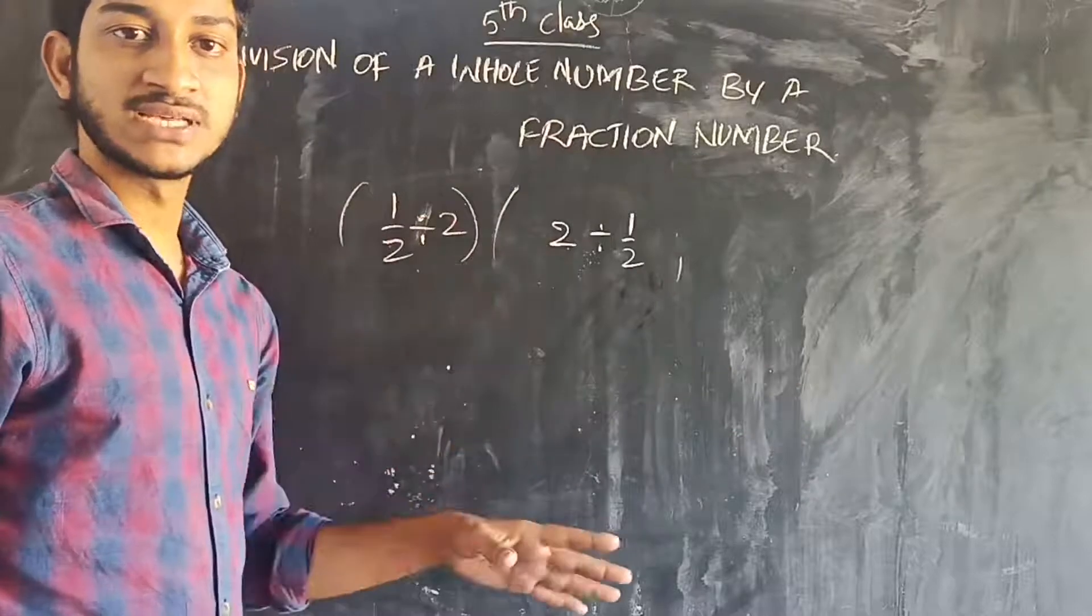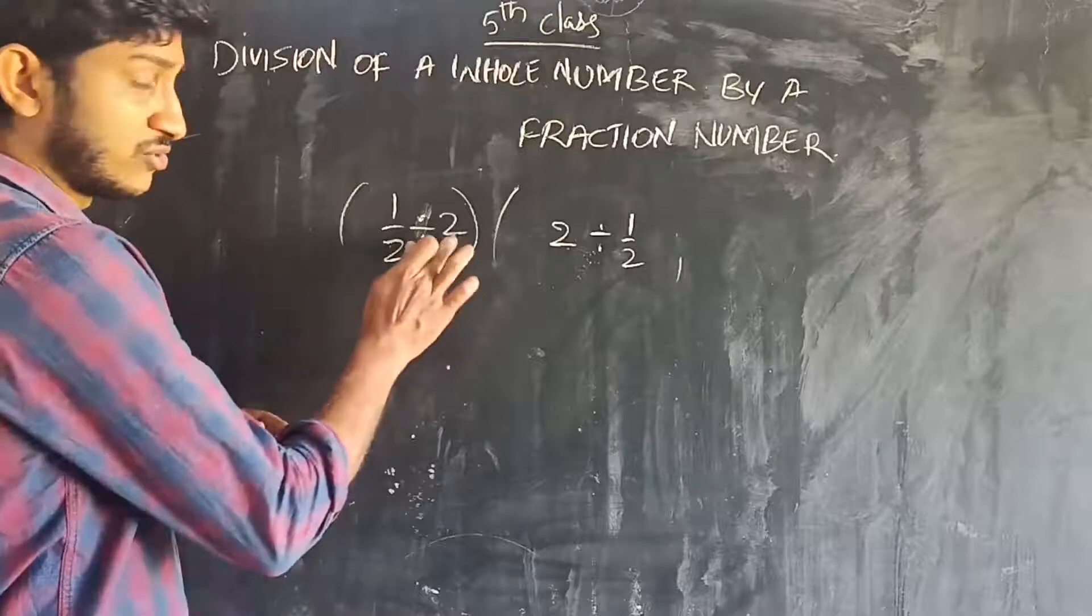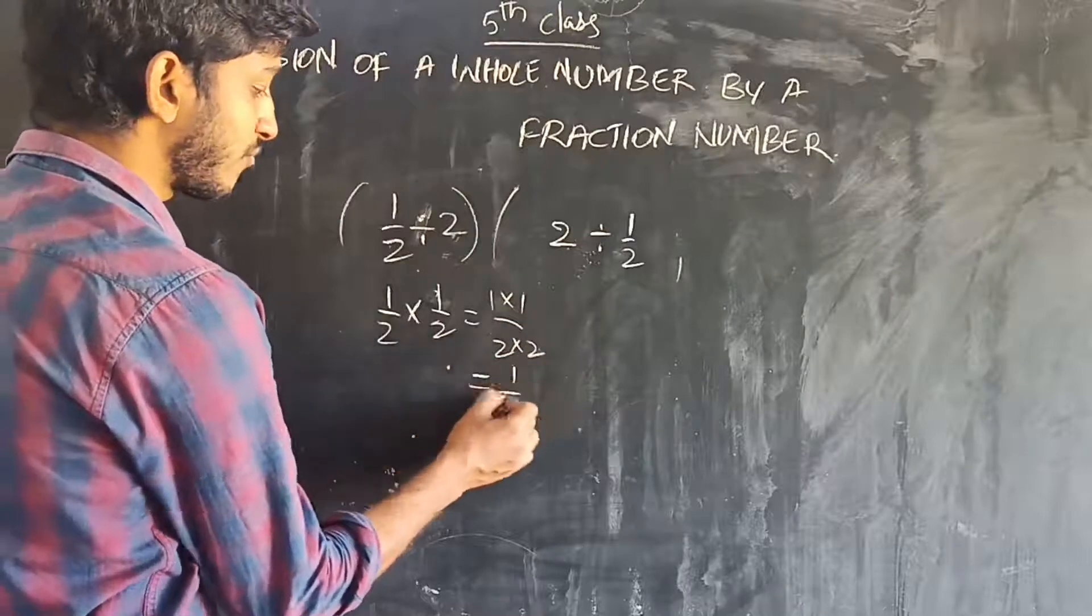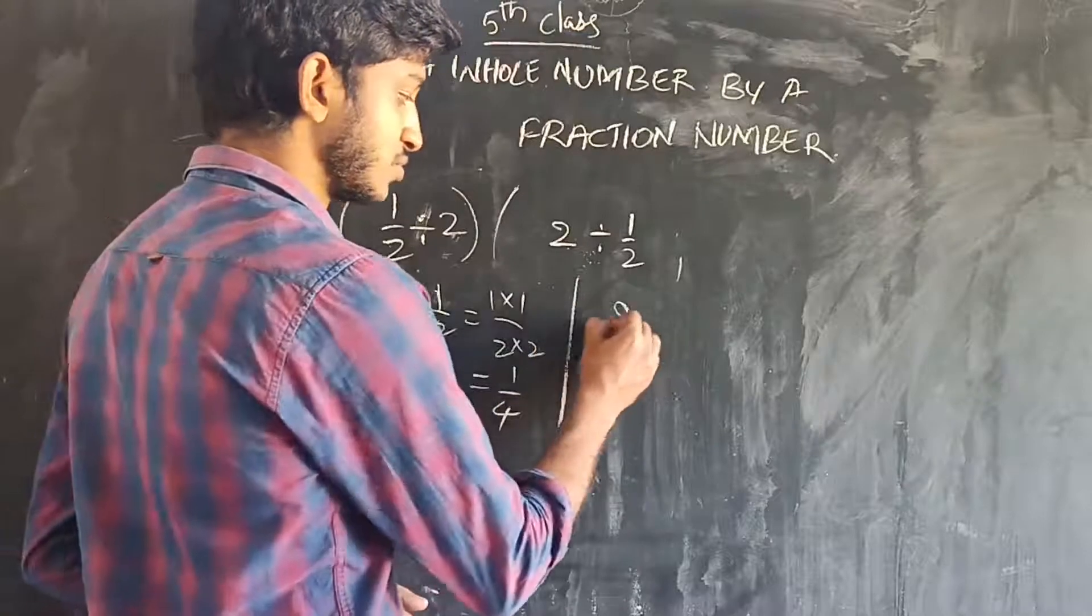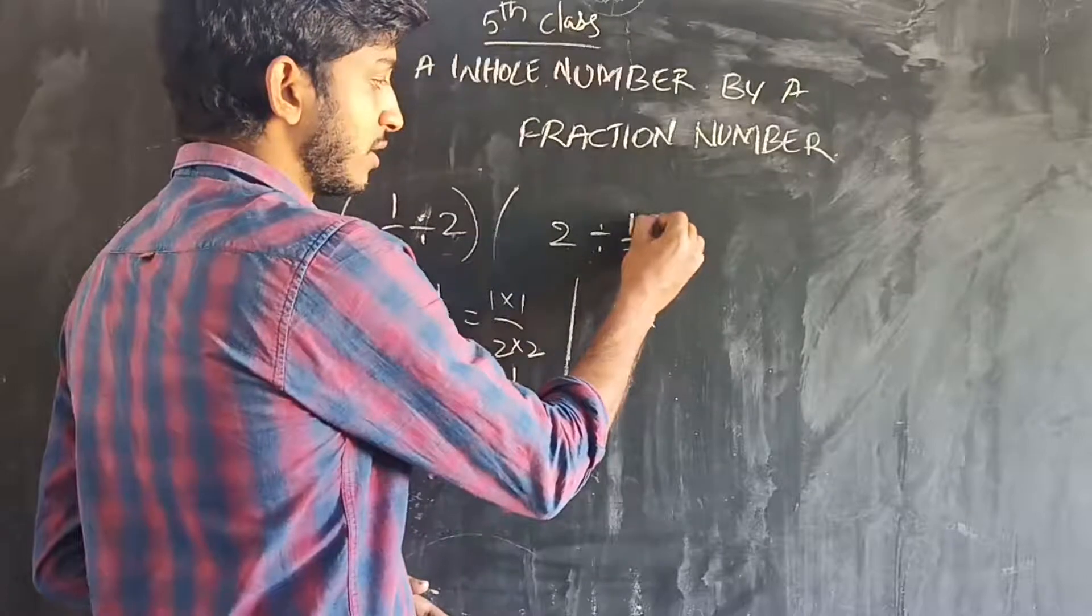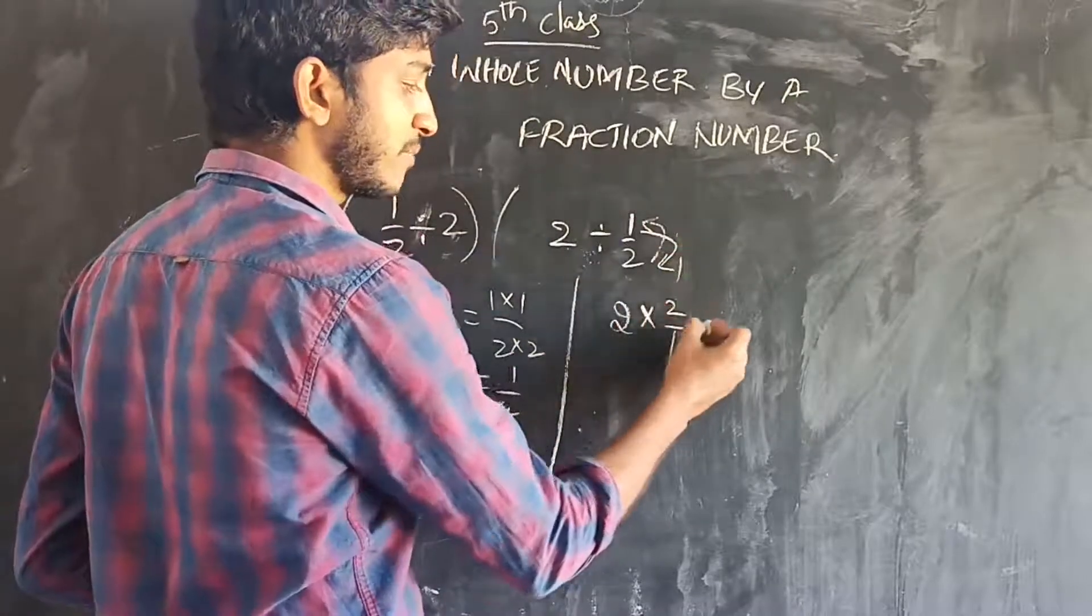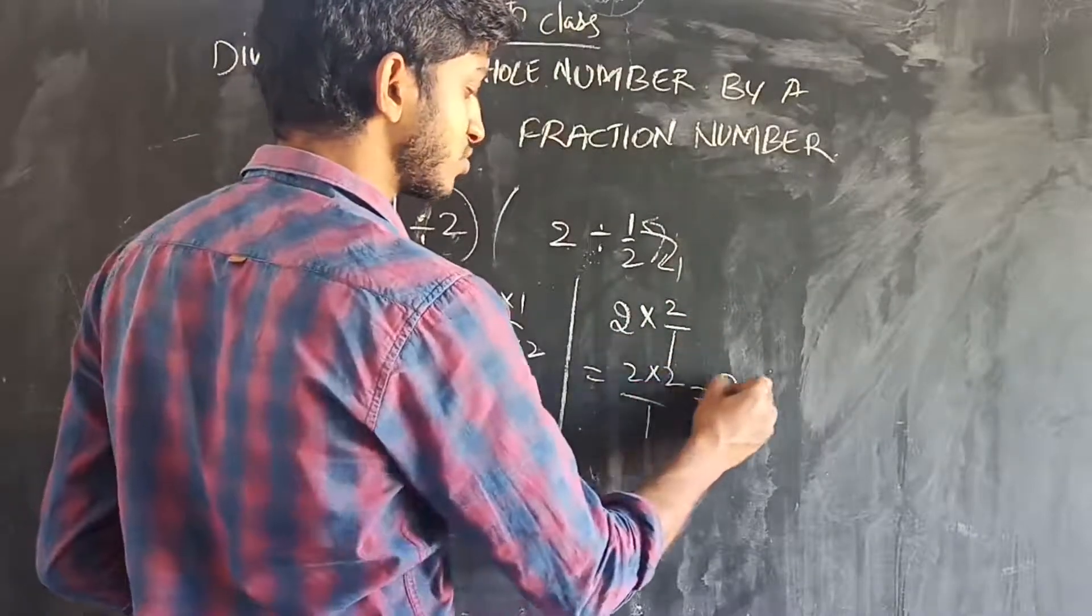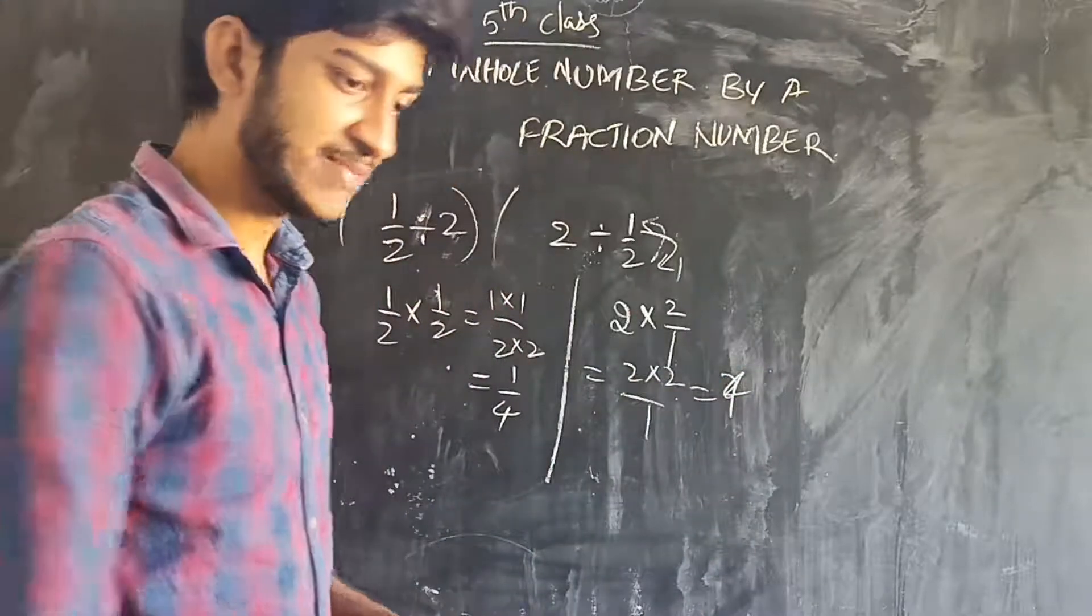We multiply the divisor reciprocally. The denominator of the fraction number becomes the numerator and the numerator becomes the denominator. So, 2 by 1 means 2 into 2 by 1. So 2 into 2 is equal to 4. 4 is the answer. Okay children? Some example problems.